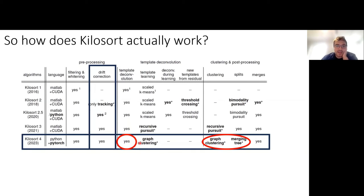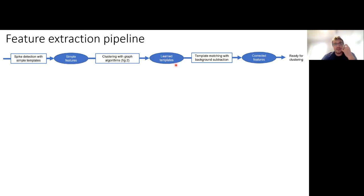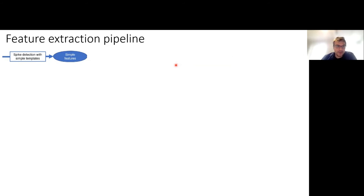Why are we able to find spikes at the low end of the amplitude spectrum? It has to do with two other big steps in Kilosort. We've discussed drift correction; now we want to talk about template deconvolution. This has been around in some form for a while — I'm going to show you the latest version. It's a pipeline that detects spikes and extracts their features, working as a sequence of incrementally better detection steps.